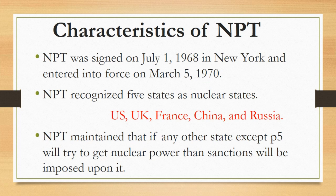NPT recognized five states as nuclear weapon states: the US, UK, France, China, and Russia. These countries are also known as the Big Five and P5 countries — the permanent members of the UN Security Council. This treaty recognizes these five states as nuclear weapon states and considers all others as non-nuclear weapon states. If any state outside the P5 tries to acquire nuclear power, sanctions will be imposed upon them. We can take Iran as an example, as it faced such sanctions in the recent past.